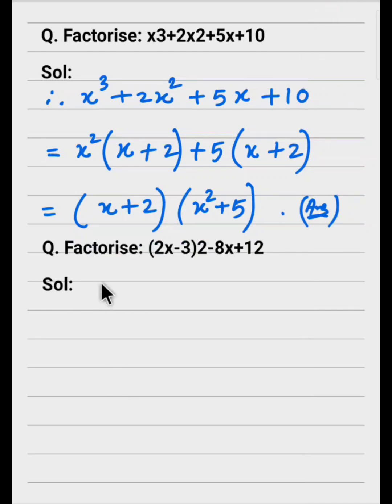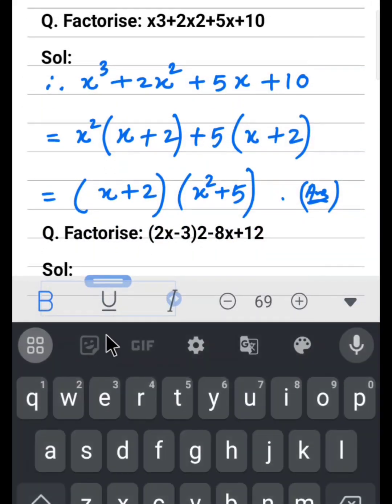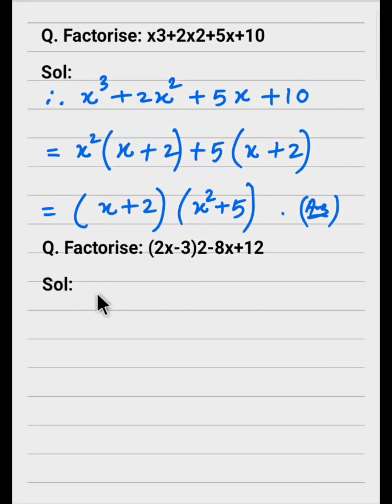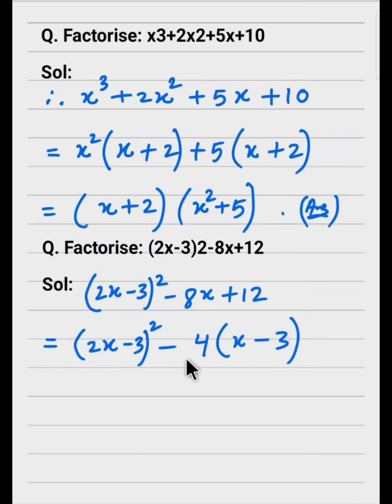Let's see the next question. (2x-3)² minus 8x plus 12. Now see, we can take 4 common, so what happens is (2x-3)² minus 4(2x-3).